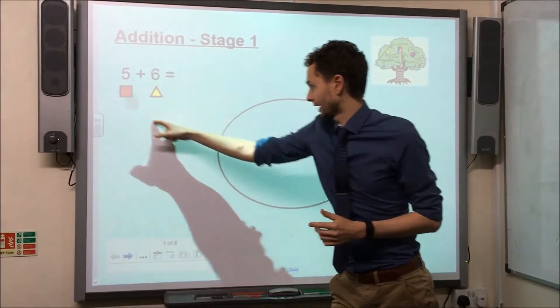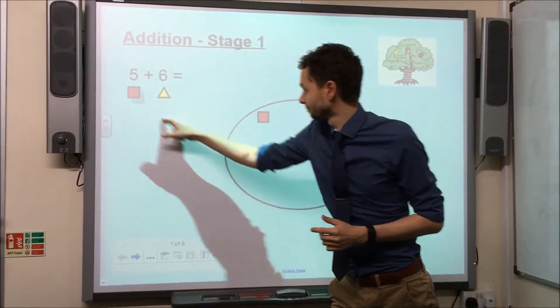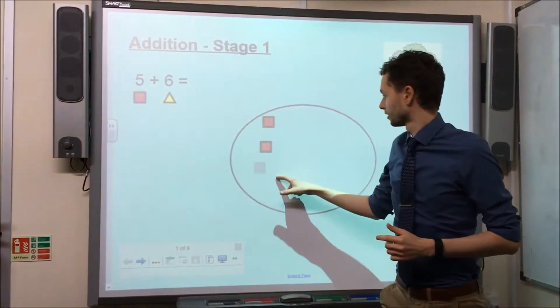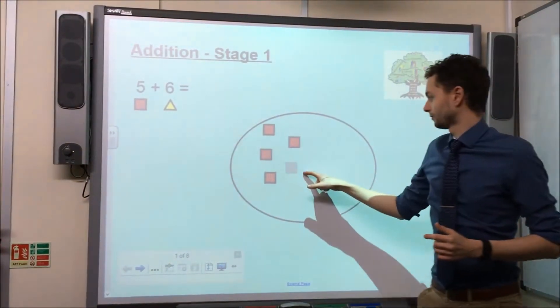So I've got squares here, I'm just going to count out 5 squares. 1, 2, 3, 4 and 5.